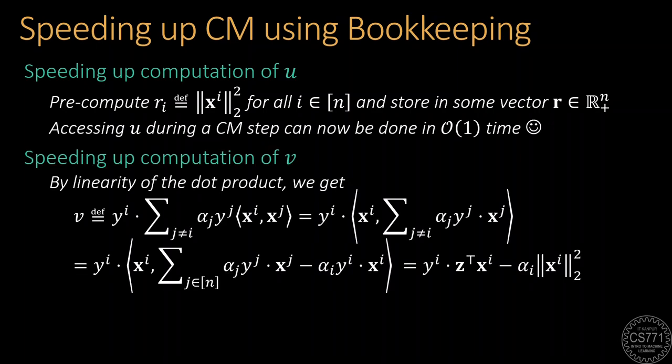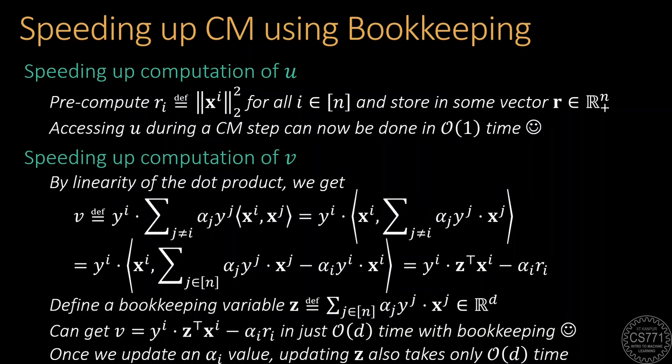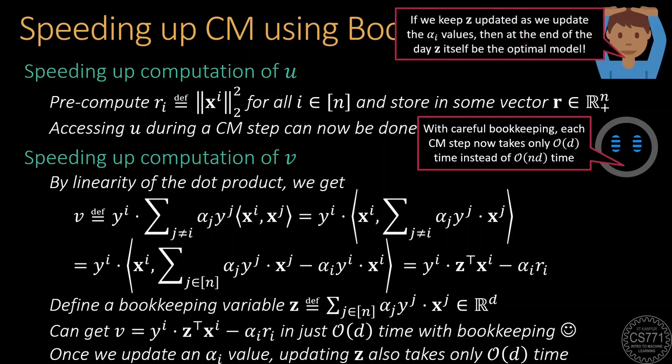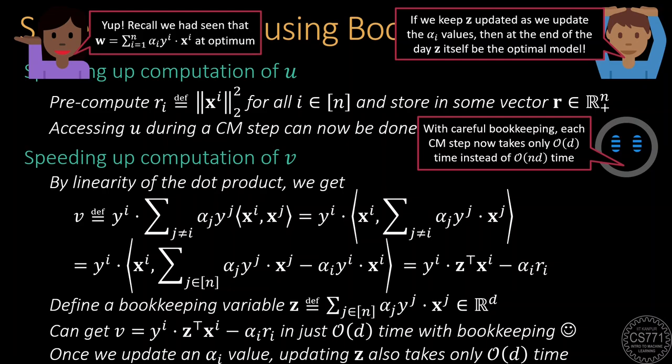Notice that this value is simply the squared Euclidean norm of the ith data point where i was the coordinate of the alpha vector we are updating. Since these values do not change during the coordinate minimization steps, we can effectively pre-compute them and store them in an n-dimensional vector, say r. During a coordinate minimization iteration, we can then simply read off the value of u in a single step. Speeding up the computation of v will take more care. Note that the time-consuming part in computing v is a summation that runs over all indices j except the index i which we are updating. If we use linearity of the dot product and complete this summation to run over all indices including i, we find that v can indeed be computed in order d time. However, to do so, we need to define a bookkeeping variable z which will always store the value of summation over all indices j alpha j times y j times x j. Note that z is a d dimensional vector which will itself need to be updated whenever any alpha coordinate gets updated. Fortunately, updating z takes only order d time once we update an alpha i value which means that using this bookkeeping technique, we can execute the entire coordinate minimization step in just order d time.